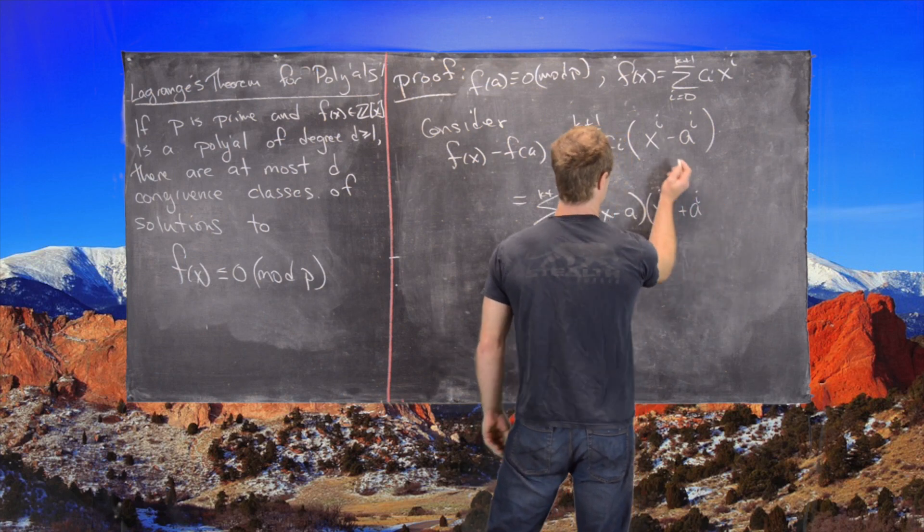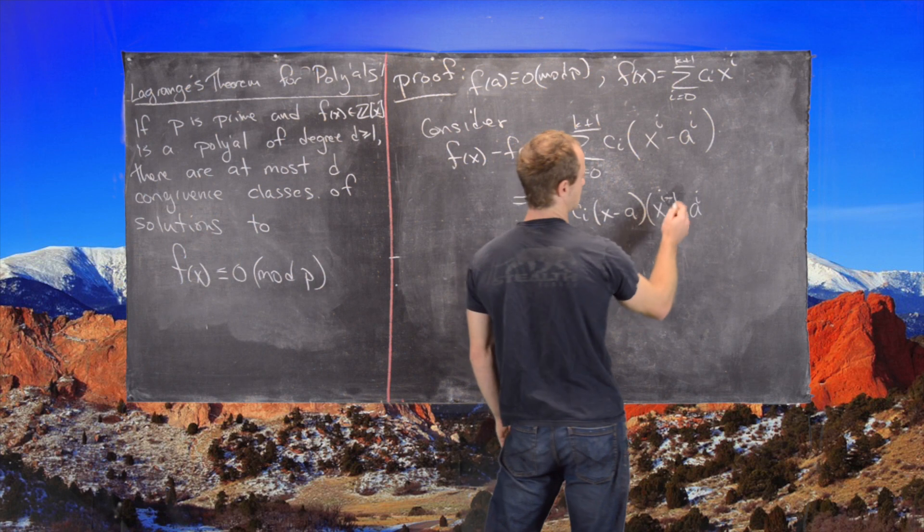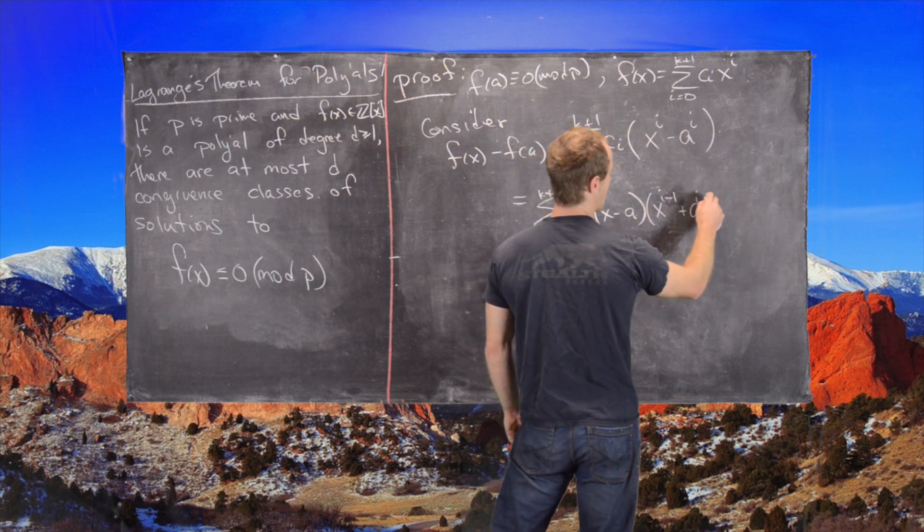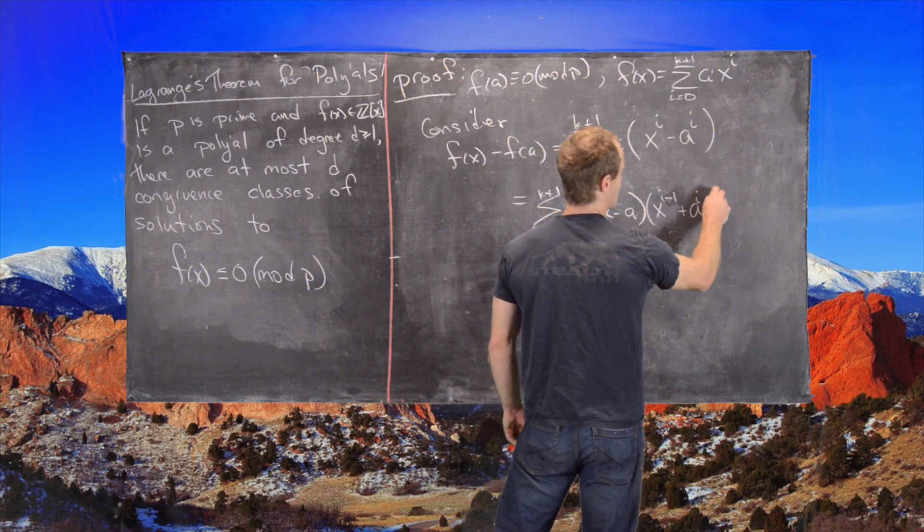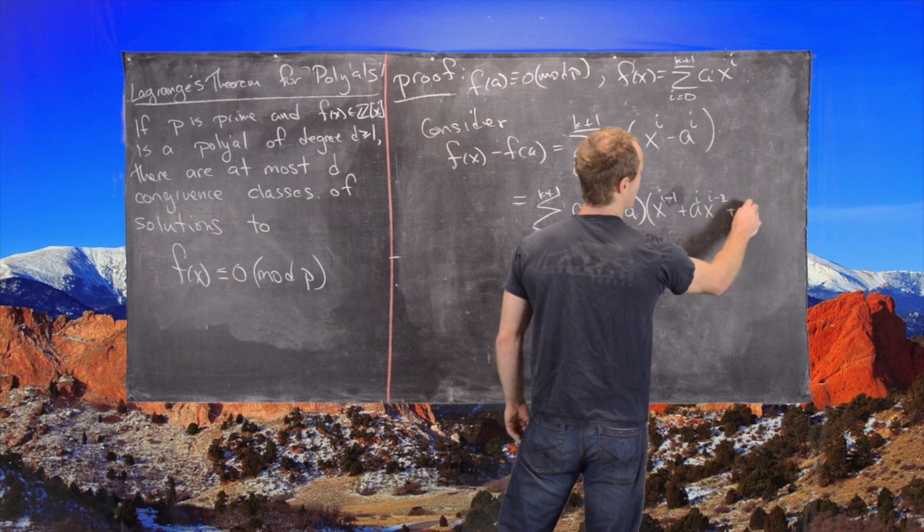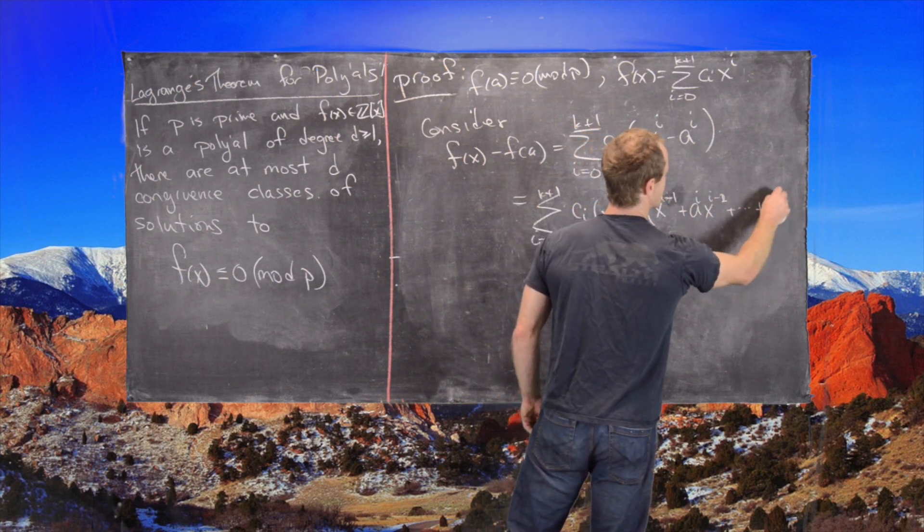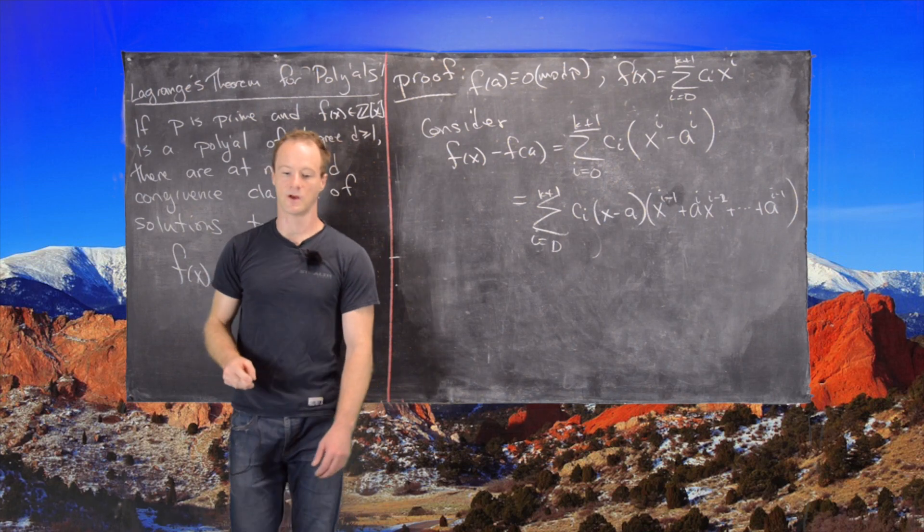And then X to the I minus 1 plus A times X to the I minus 2 plus all the way down to A to the I minus 1.